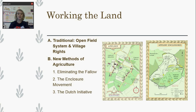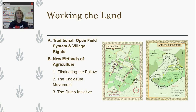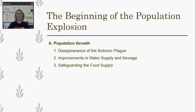Another thing that changes in agriculture is something called the Dutch Initiative. The Netherlands is a pretty swampy place to live, and the Dutch figured out how to drain the land and the swamps in order to make land livable. This idea passed into England, which is also a pretty wet, rainy place, allowing more land to be open, lived on, and farmed on. This really changed the way people in rural areas lived.